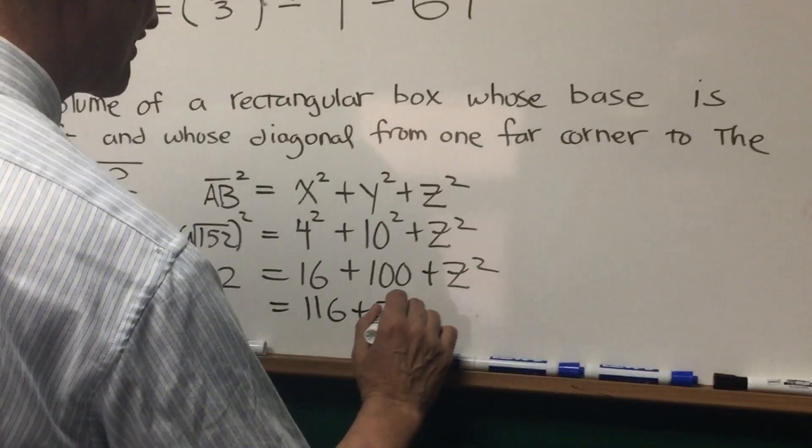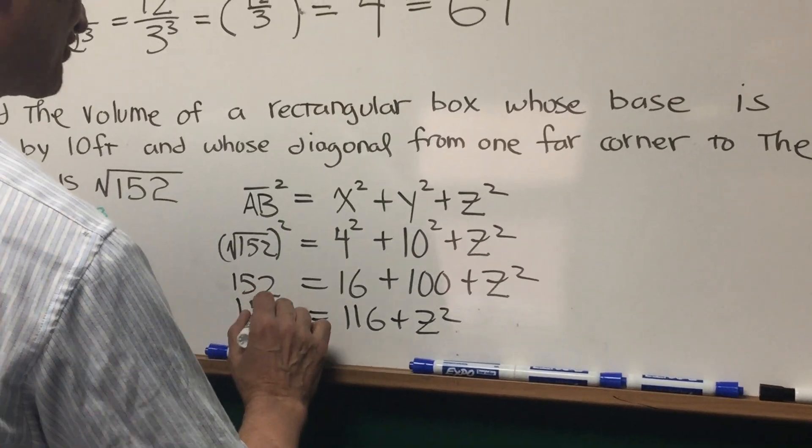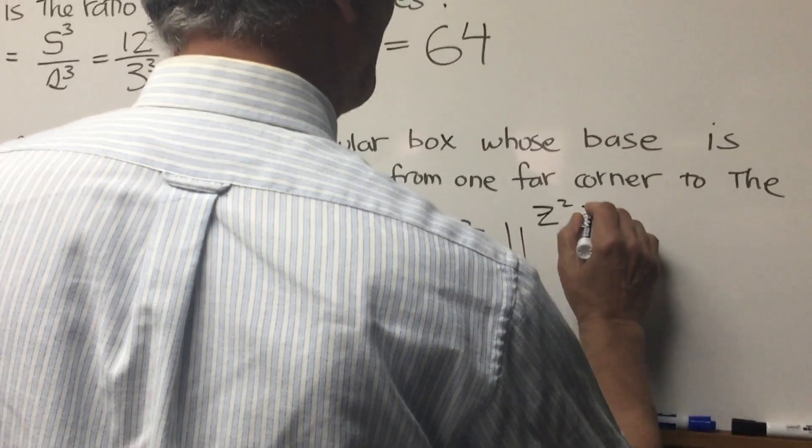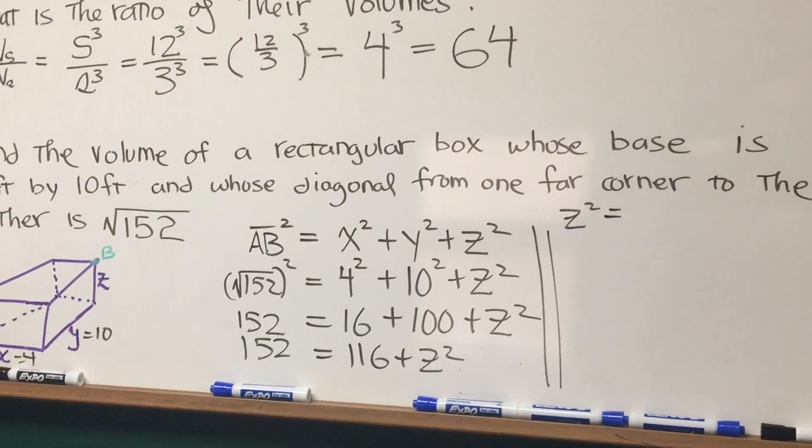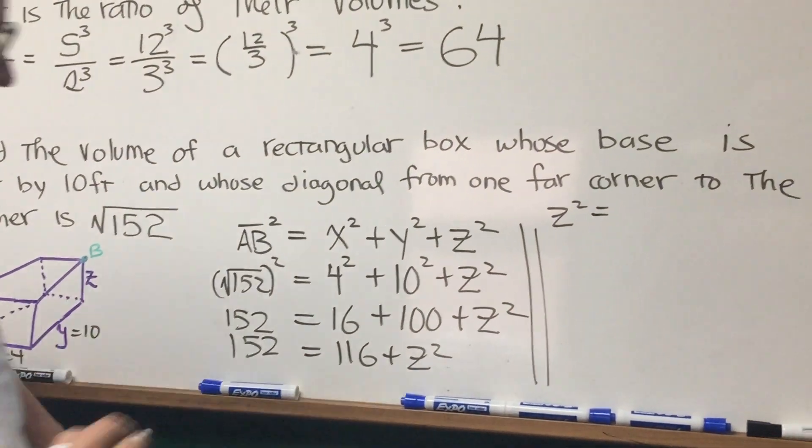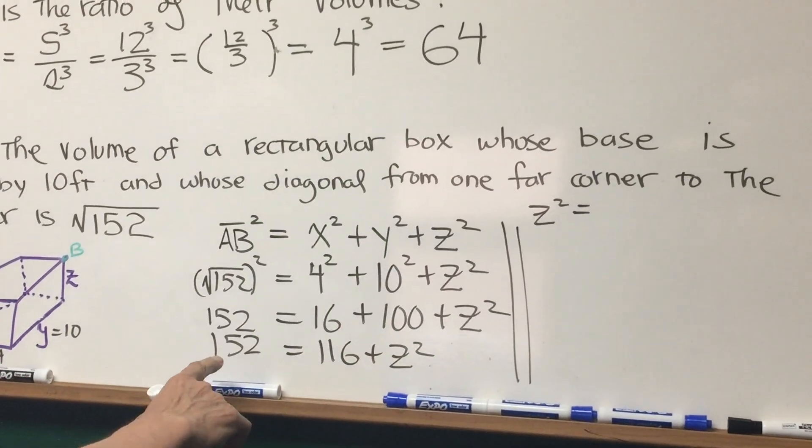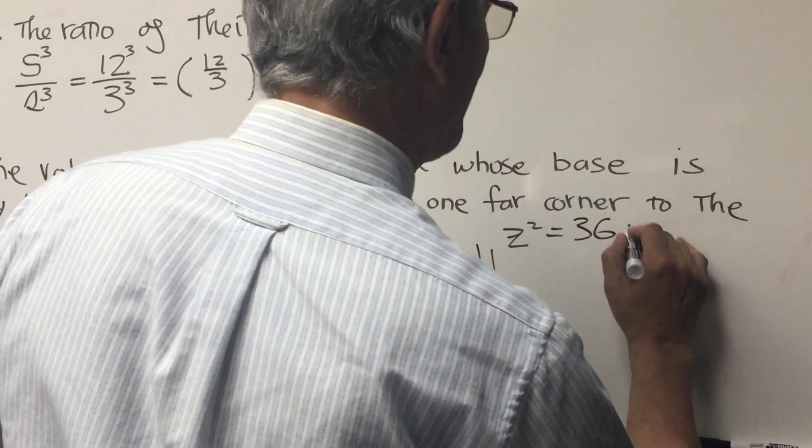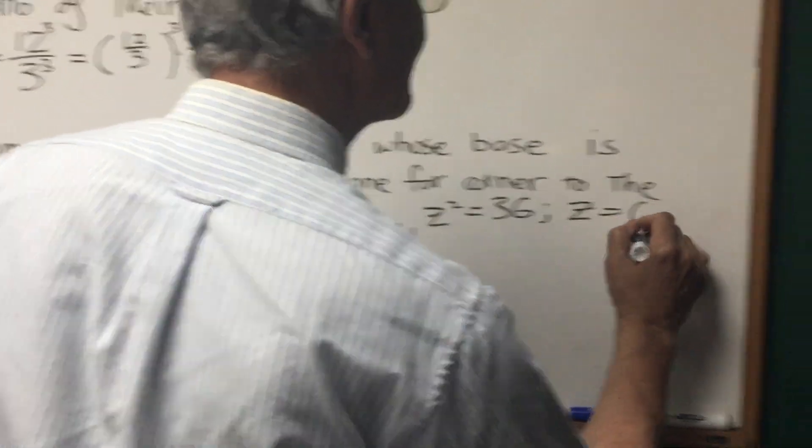So what do we have here? 116 plus z squared is 152, and therefore, z squared is equal to 36. So therefore, z is equal to 6.